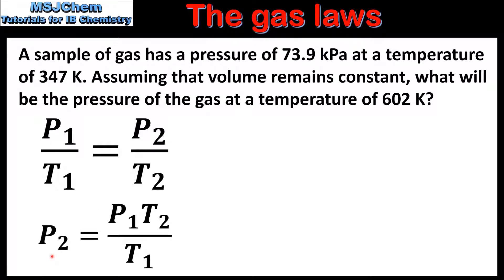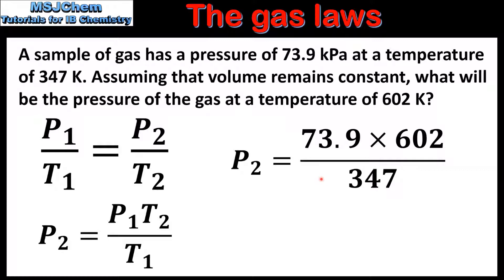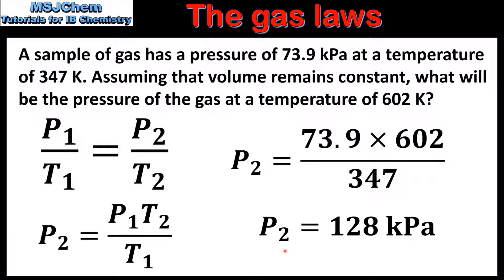Here we have the equation rearranged to solve for P2. Substituting the values: P1 is 73.9 kilopascals, T2 is 602 kelvin, and T1 is 347 kelvin. This gives us a value for P2 of 128 kilopascals.